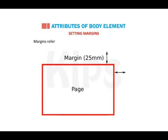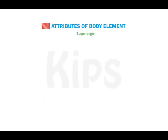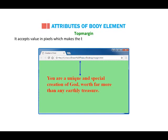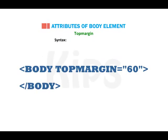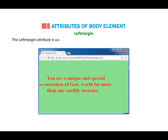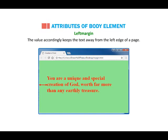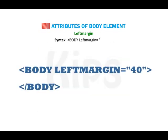Setting Margins. Margins refer to the blank space left from the edge of the page. HTML provides facilities to set margins as per your desire. The Top Margin attribute is used to set the top margin from the edge of a web page. It is given in the body tag and accepts a value in pixels, making the body text appear the specified number of pixels away from the top edge. Syntax: body topmargin="value". The Left Margin attribute is used to set the left margin of a web page by leaving some blank area on the left side. Like Top Margin, it is also given in the body tag with a value in pixels, keeping the text away from the left edge. Syntax: body leftmargin="value".